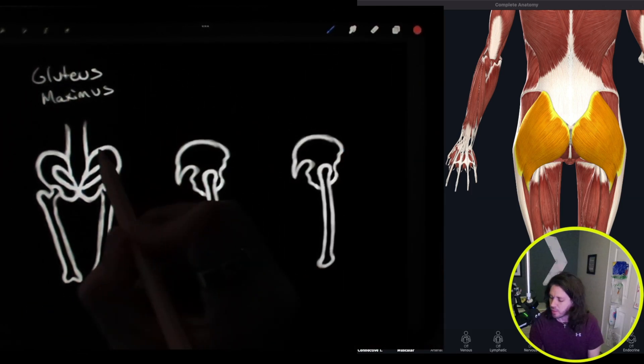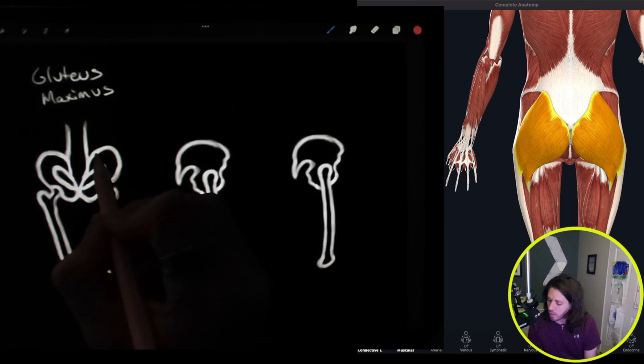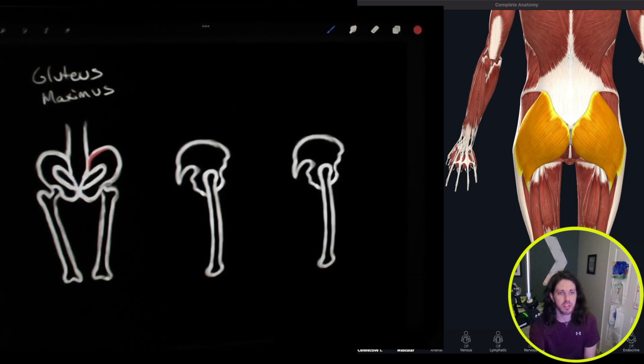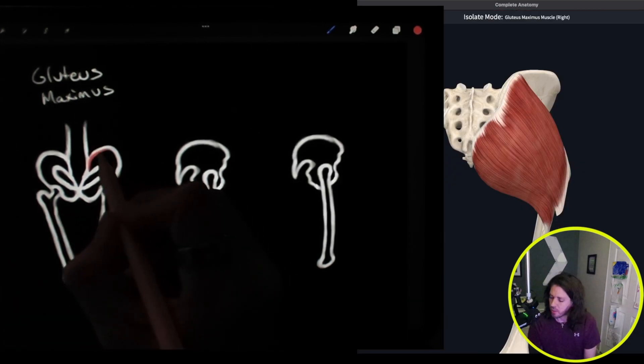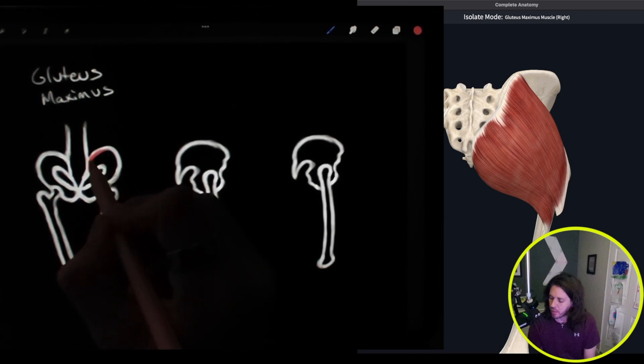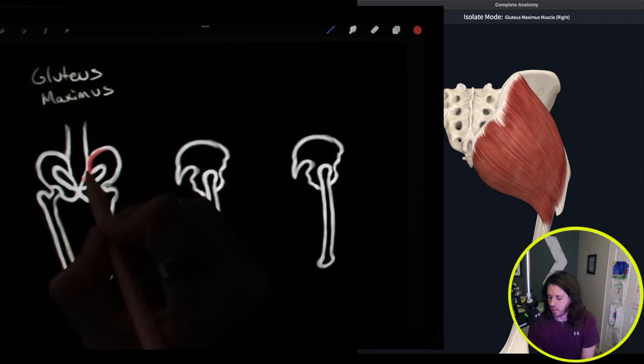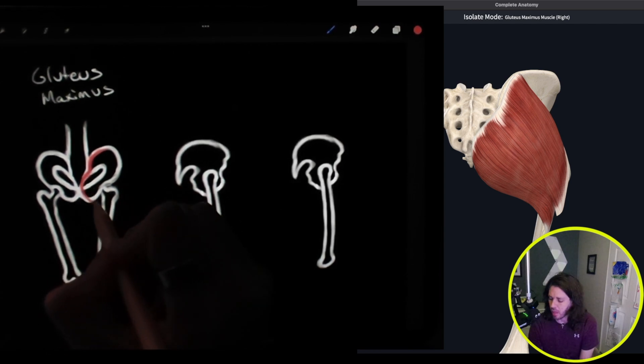This is going to start on the origin right along the ilium here. It's gonna curve down. Let's take a look at the isolation view here. If you're interested, I'm using Complete Anatomy to take a look at this. Alright, so it curves right along here, the ilium, and it also does a little bit of curve inside of the sacrum. And then it comes along down at the bottom of the pelvic bone.